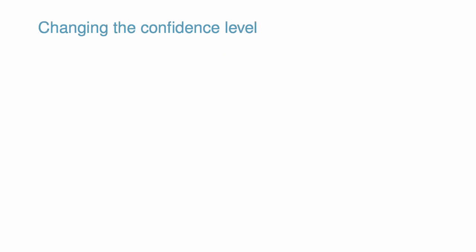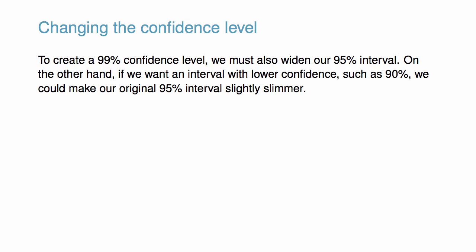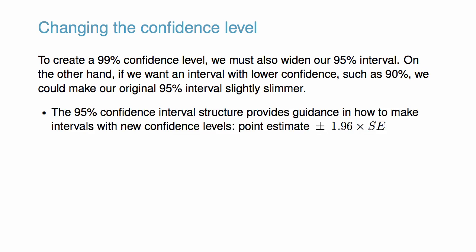Suppose we want to consider confidence intervals where the confidence level is somewhat higher than 95%. Perhaps we would like a confidence interval of 99%. To create a 99% confidence level, we must widen our 95% interval. On the other hand, if we want an interval with a lower confidence, such as 90%, we could make our original 95% interval slimmer. The 95% confidence interval structure provides guidance on how to make intervals with new confidence levels.